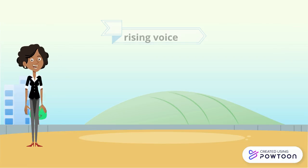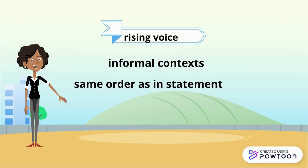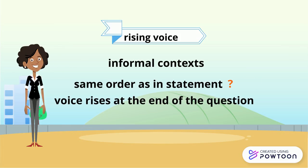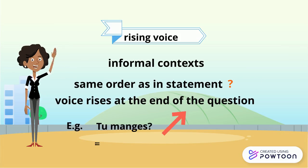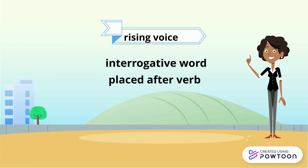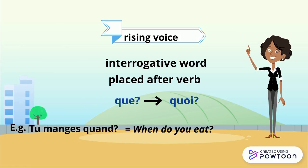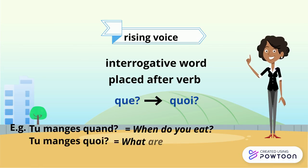Finally, the rising voice is used only in informal contexts. You keep the same order as in a statement and you add a question mark — your voice rises at the end of the sentence. For instance: "Tu manges?" — are you eating? When you use an interrogative word, you place it after the verb, and que becomes quoi. For instance: "Tu manges quand?" — when do you eat? "Tu manges quoi?" — what are you eating?